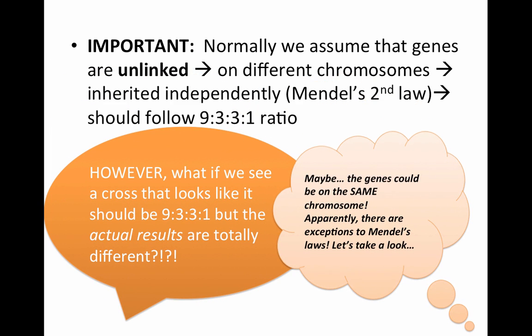Normally, we assume that the genes are unlinked. Unlinked means they are on different chromosomes, inherited independently. Therefore, they follow Mendel's second law and should follow the predicted ratio as the Punnett square shows us.